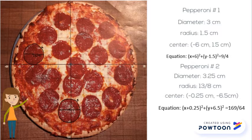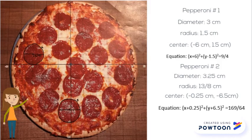After that, I found the very center spot, and that was negative 6 centimeters and 1.5 centimeters. I then took the information I had acquired and plugged it into the original standard form equation, and that's how I came up with my equation. And I did the same steps for pepperoni too.